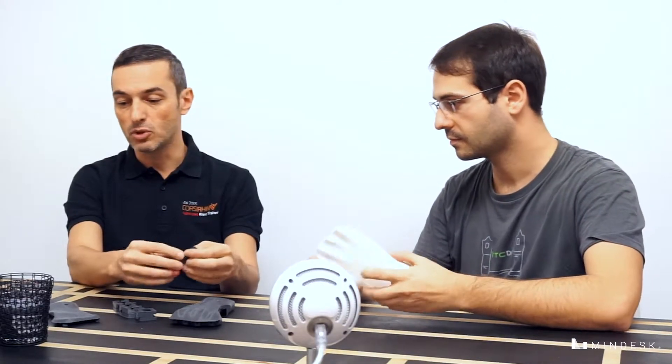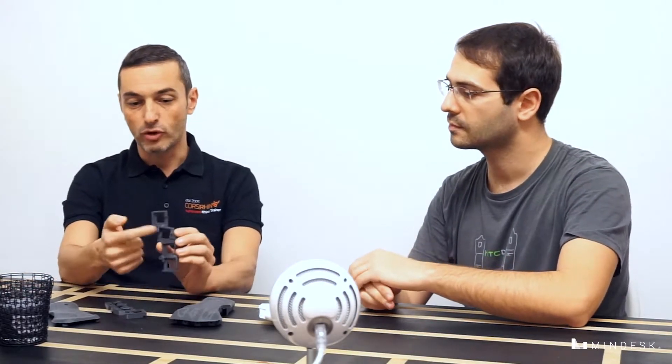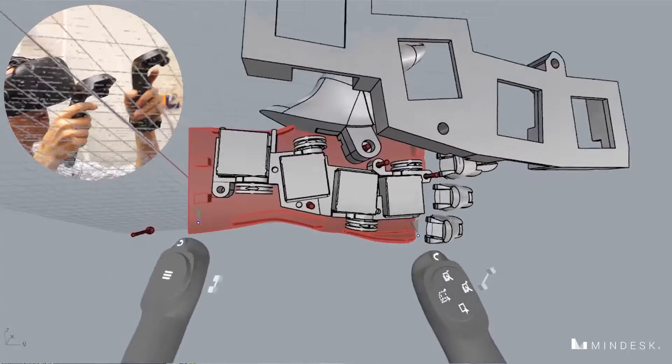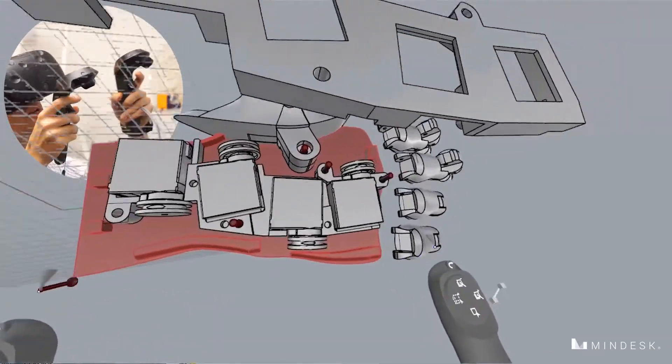They go together and they move. Because of this we have four motors. Each motor is able to move one of the fingers, and then there's a fifth motor outside to move the thumb.